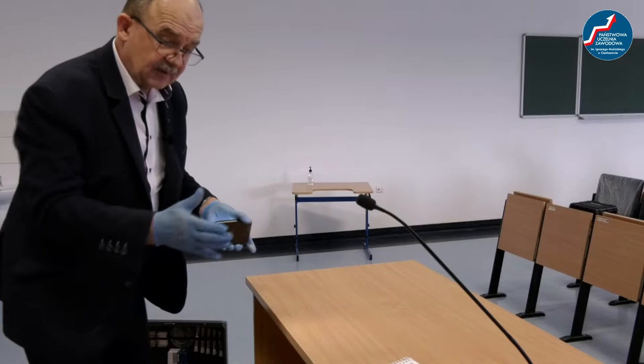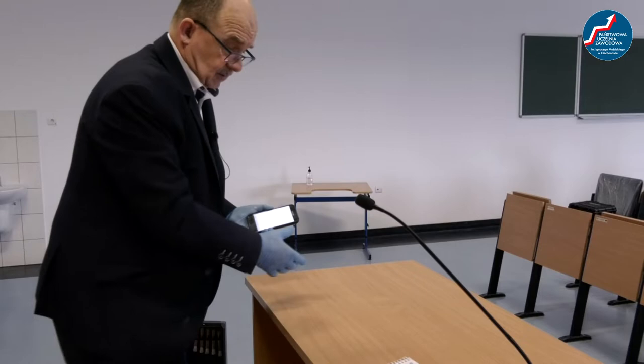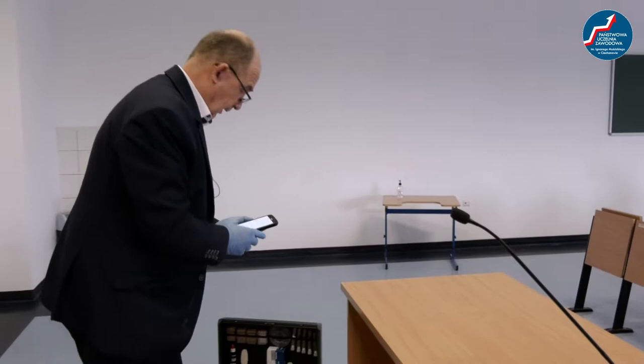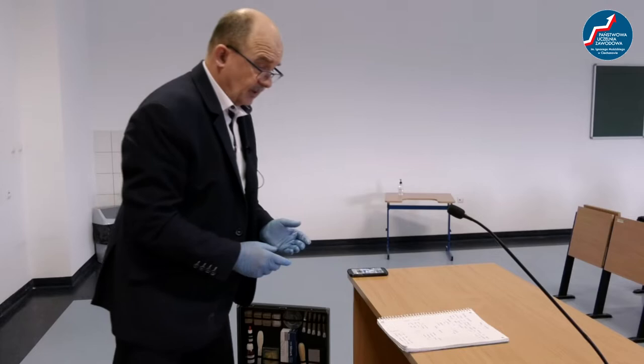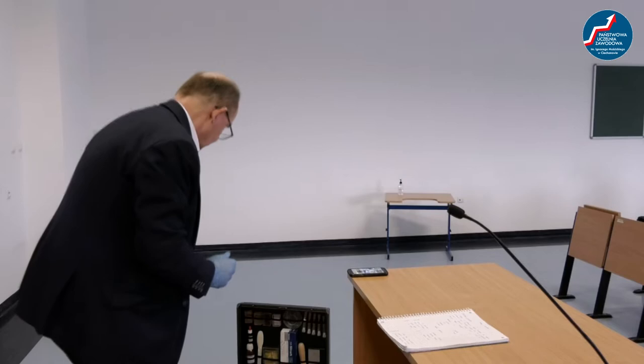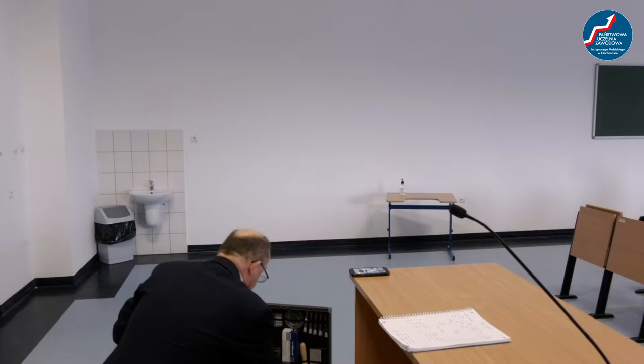Nie mamy tutaj śladu, ale tu leży notatnik. Może sprawca przełożył go, żeby nie przeszkadzał mu podczas kradzieży tego laptopa. Postaram się poszukać śladów również na tym notatniku. Notatnik to papier – na papierze nie ujawniamy śladów argentoratem, tylko sadzą albo proszkiem ferromagnetycznym. Użyję tutaj proszku ferromagnetycznego i pędzla, który do nanoszenia tego proszku służy.